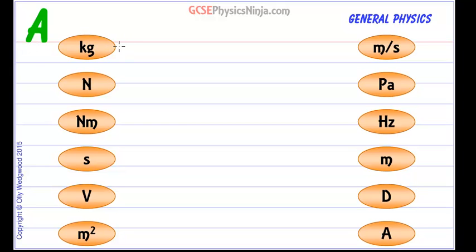Kg stands for kilogram and that is the quantity called mass. The next base unit is S which stands for seconds and that's the base unit of time. Next we have M which stands for meters and that is the base unit of length or distance.